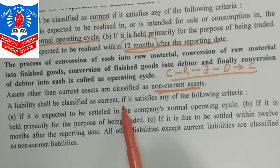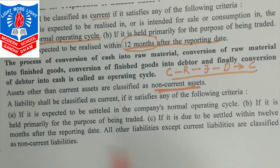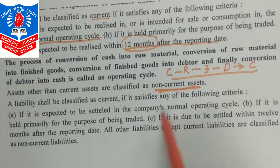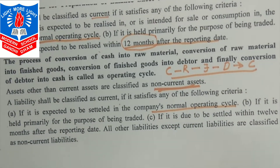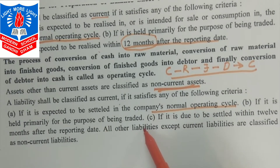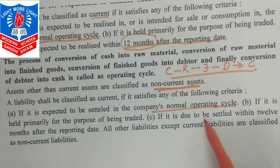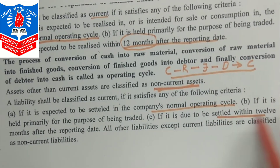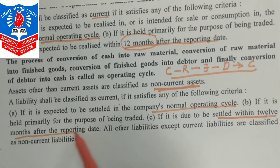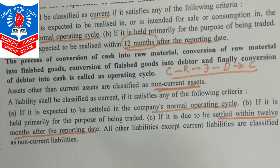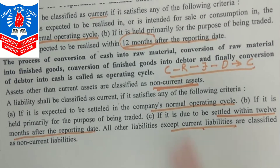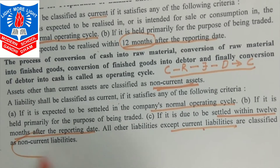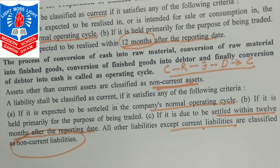A liability shall be classified as current if it is expected to be settled in the company's normal operating cycle, or if it is to be settled within 12 months after the reporting date. Such liabilities are known as current liabilities. Other than these, all liabilities will be known as non-current liabilities.